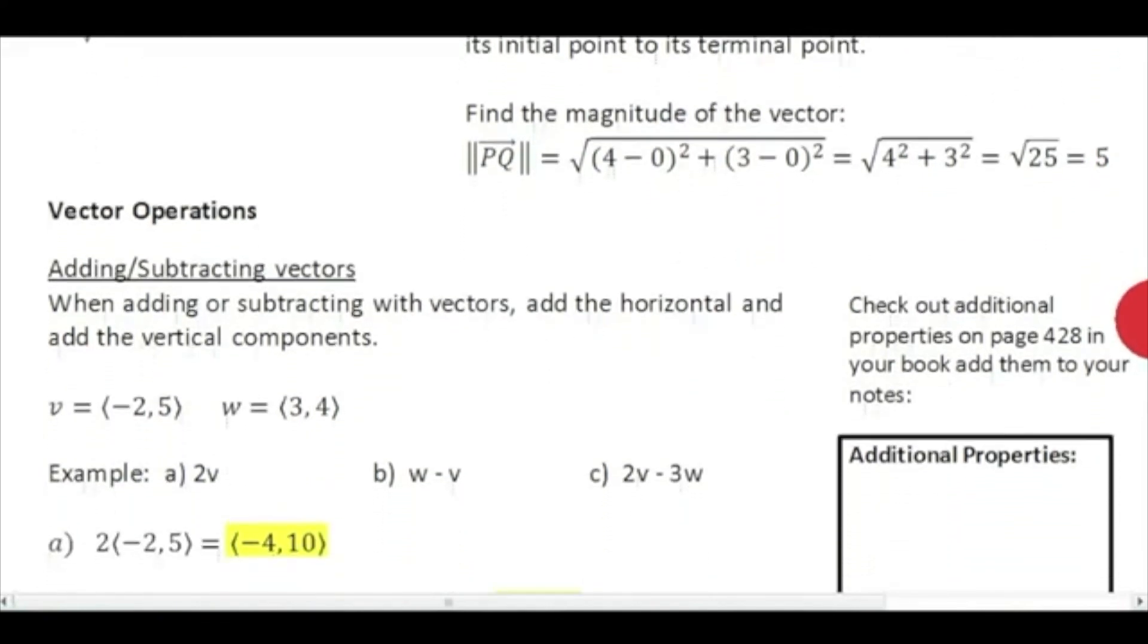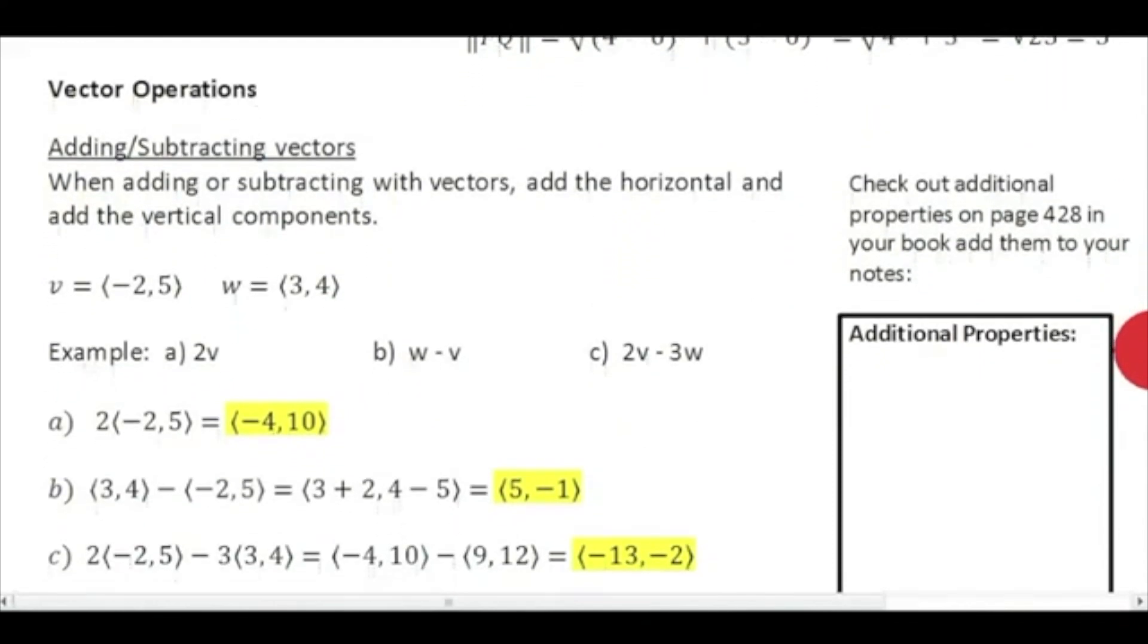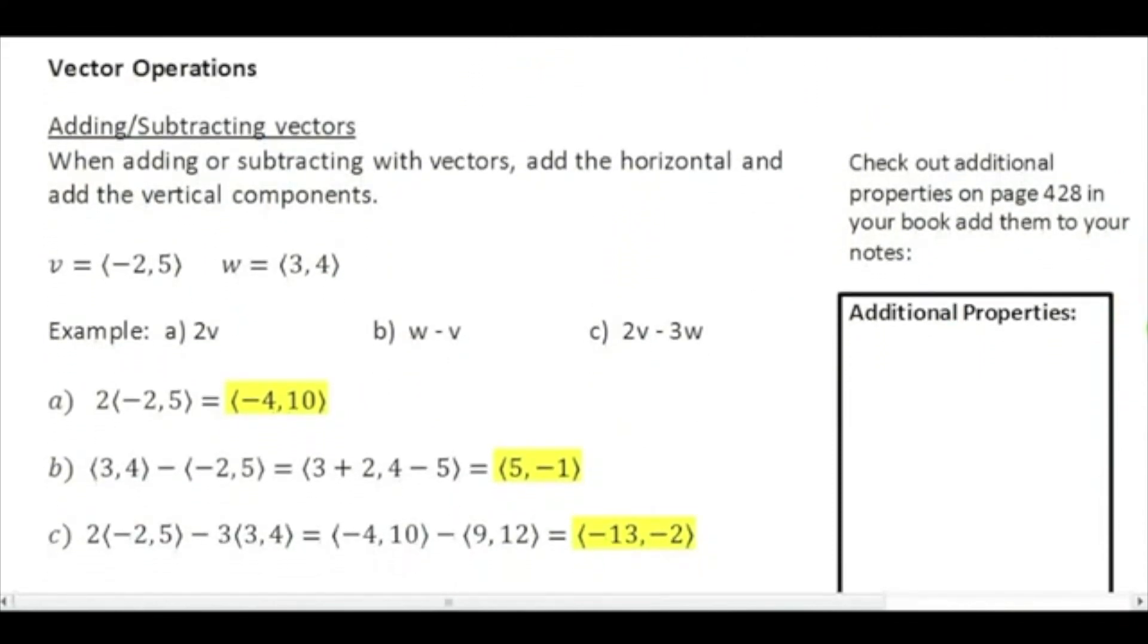Okay, moving on to a little bit more vector operations. Let's talk about adding and subtracting vectors and a little bit of scalar multiplication. Scalar multiplication can translate into basically just the distributive property. So, I've got two vectors, v, which is negative 2, 5, w, which is 3, 4.